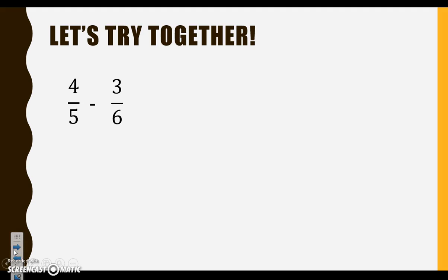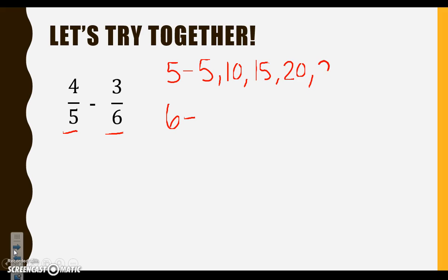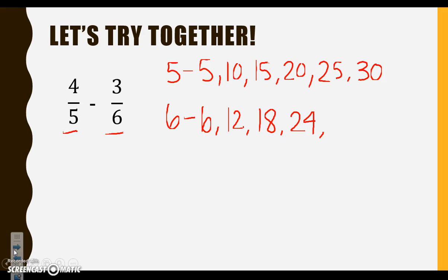Let's try one last one together. Again, we have to make sure when we're subtracting fractions that our denominator is the same, so we're going to find a multiple they have in common. Let's start with 5: 5, 10, 15, 20, 25, 30. Let's look at 6: 6, 12, 18, 24, 30. Do we see a number that they have in common? We see 30.